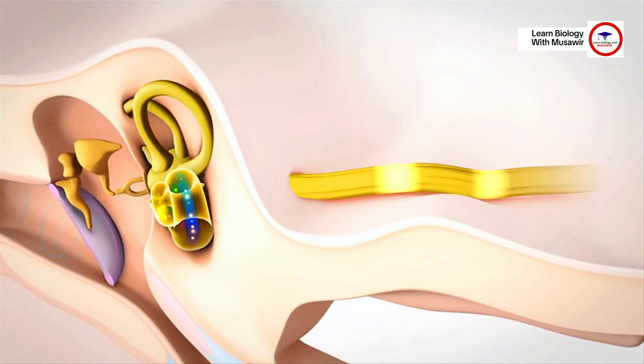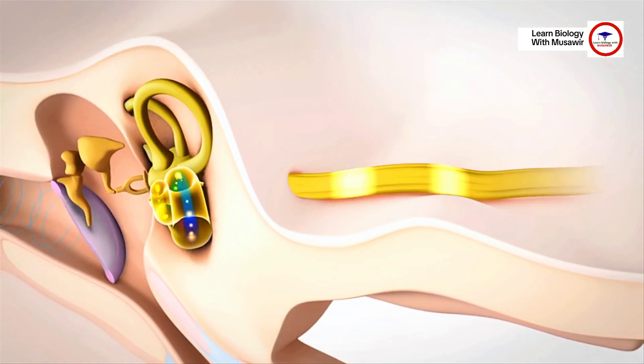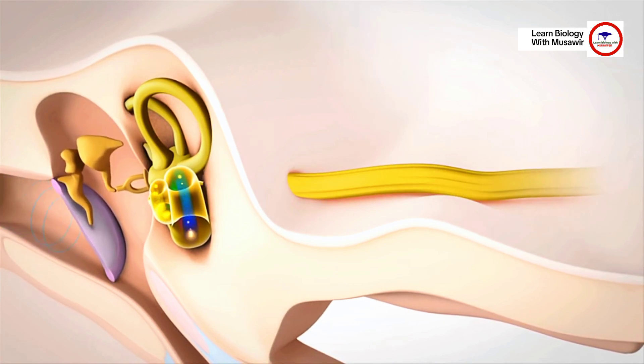The auditory cortex of the brain interprets this information as sound, for example as music or speech.